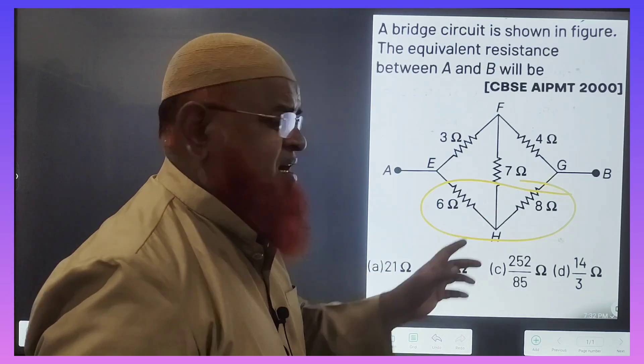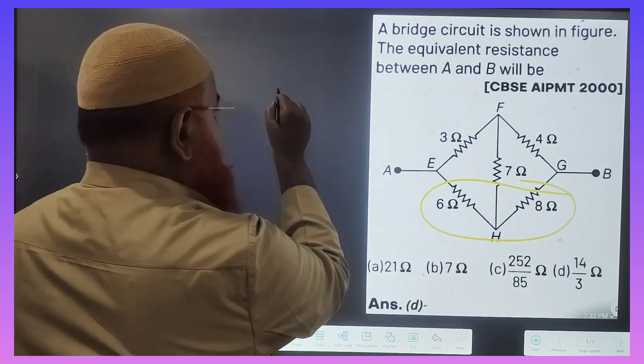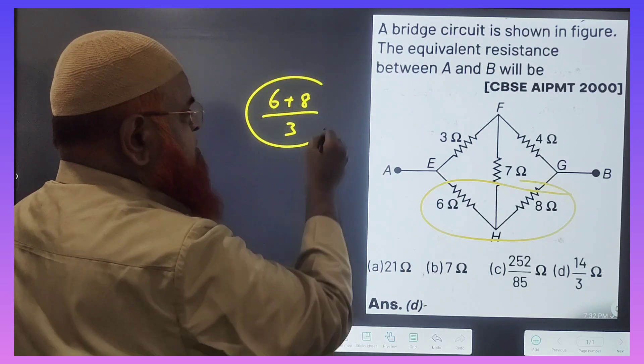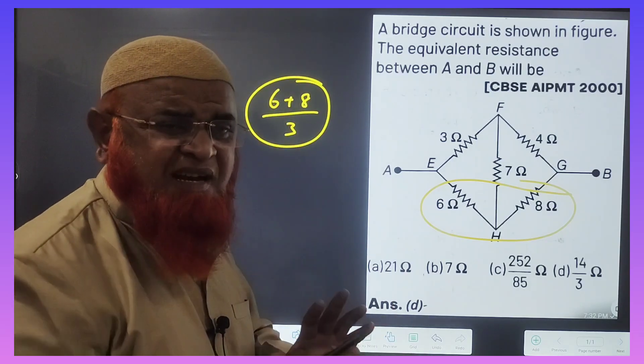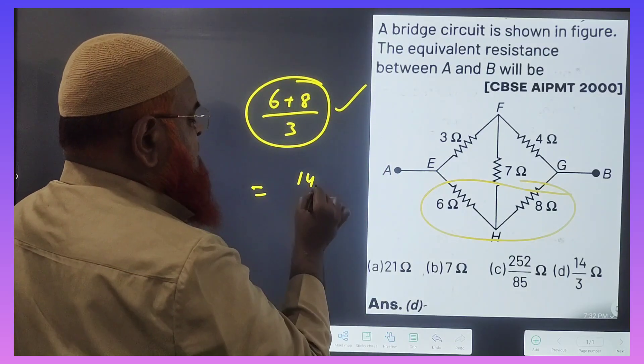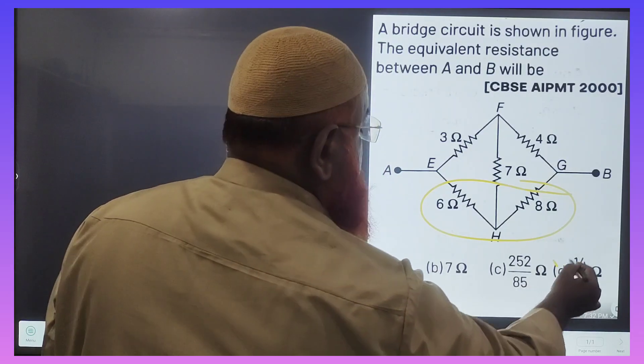That means you have to add the bottom resistances: 6 plus 8 divided by 3 is going to be your answer. No formula, nothing. Directly you will get the answer, that is 14/3. Hope you have enjoyed. Thank you.